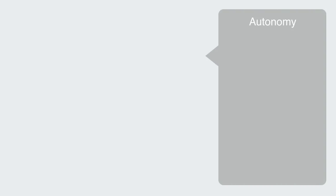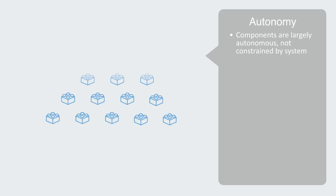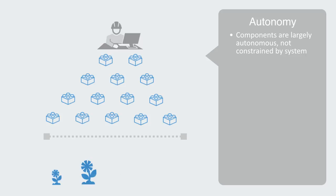This helps to emphasize the important fact about autonomy — the components are largely autonomous and not fully constrained by the system. This runs very much contrary to our traditional idea of engineering, where control over the entire system is thought to be a prerequisite, with systems designed in a top-down fashion. But this is not how the Internet was created, nor electrical power grids, nor our metro area. They all started small and evolved to become the complex systems they are today.